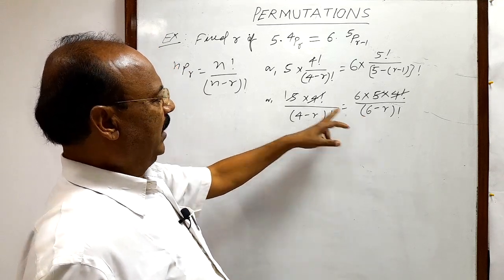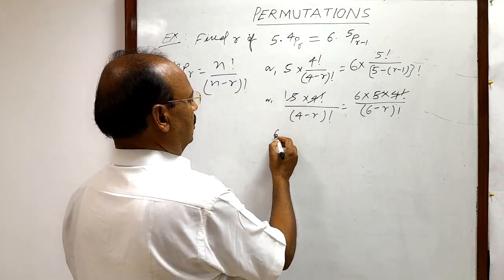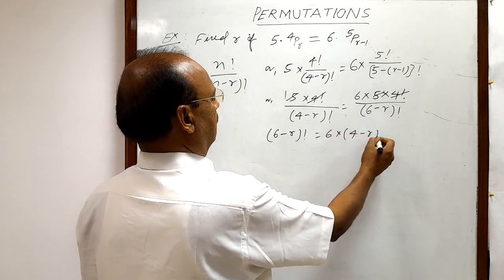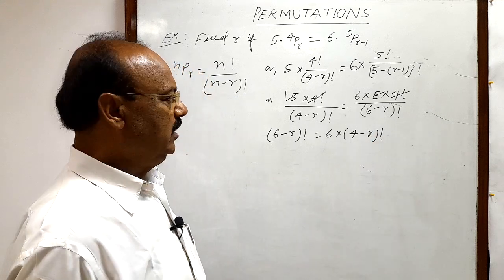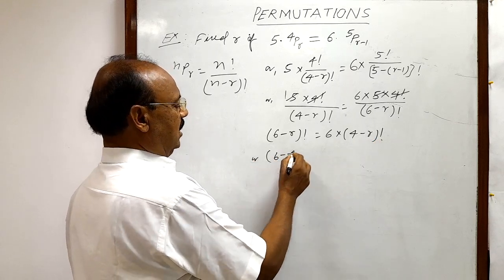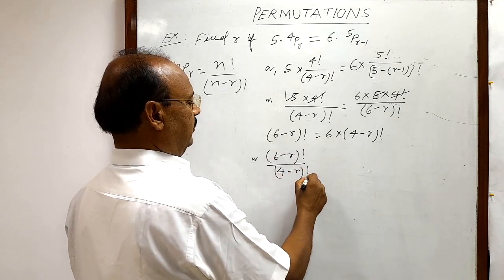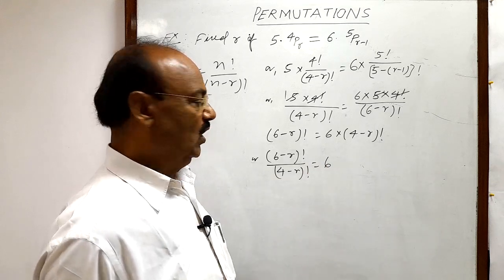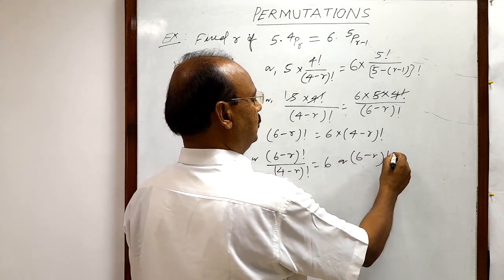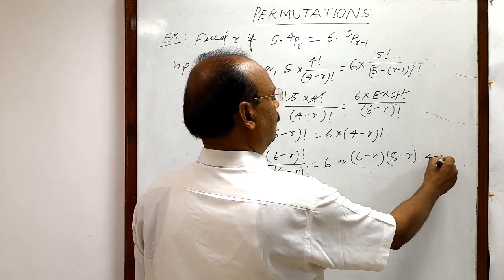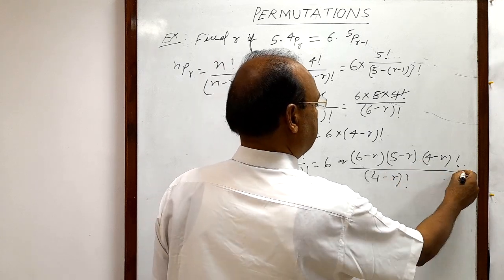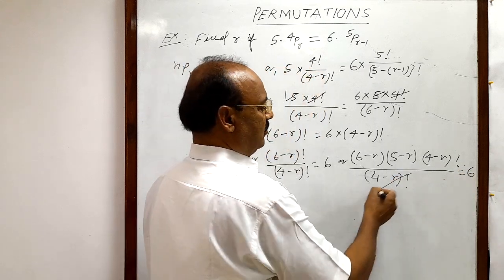By cross multiplication we get (6 minus r) whole factorial equal to 6 into (4 minus r) whole factorial. Transposing (4 minus r) factorial to the left hand side gives (6 minus r) factorial divided by (4 minus r) factorial equals 6. Expanding (6 minus r) factorial as (6 minus r) into (5 minus r) into (4 minus r) factorial, divided by (4 minus r) factorial equals 6, and (4 minus r) factorial cancels.